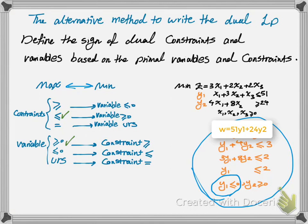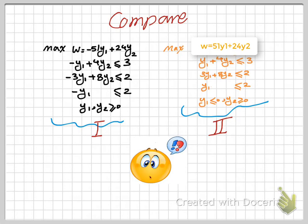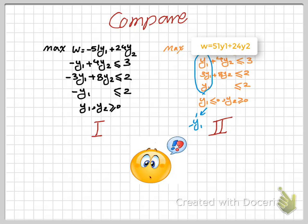Instead of normalizing, what happened was my y1 is now less than or equal to 0. Don't forget to put a max here because the dual of a min problem is a max problem. Now let's do a comparison. From normalization and writing the dual we got one linear programming problem. Without normalization we got another. Are these two the same? The answer is yes. Because y1 is less than or equal to 0, we learned that you have to change it to another variable that is positive — y1 equals negative y prime — and replace that into your equations and objective function. So whether you normalize the primal and then write the dual, or directly write the dual without normalization, your answer is going to be exactly the same mathematically. You might find one method easier than the other.